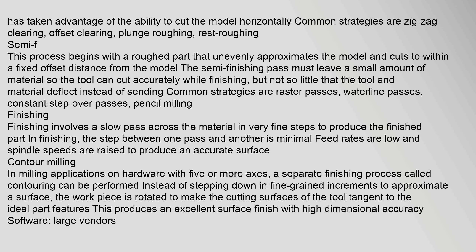Semi-finishing begins with a roughed part that unevenly approximates the model and cuts to within a fixed offset distance from the model. The semi-finishing pass must leave a small amount of material so the tool can cut accurately while finishing, but not so little that the tool and material deflect. Common strategies include raster passes, waterline passes, constant step-over passes, and pencil milling.